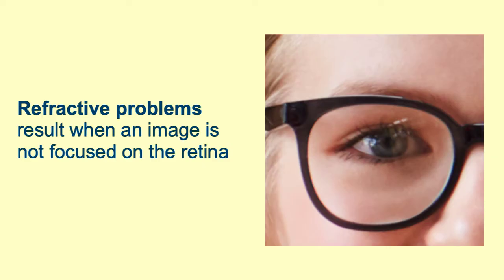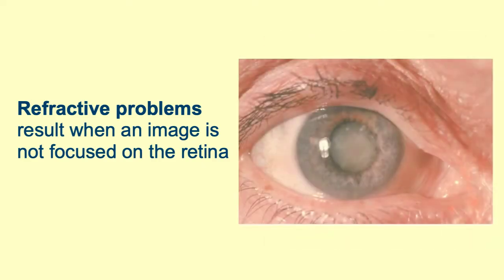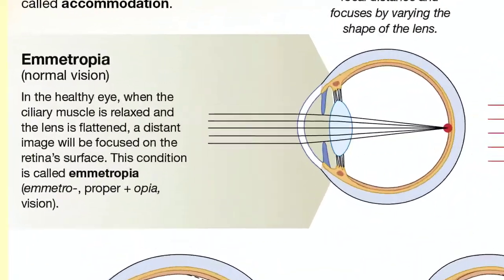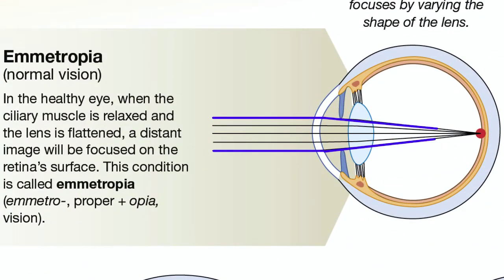Have you ever wondered how glasses correct vision? Or what is a cataract? When light passes from the air into your eyes, the light is refracted or bent. This bending begins at the cornea and continues through the rest of the eye because these structures are denser than air.